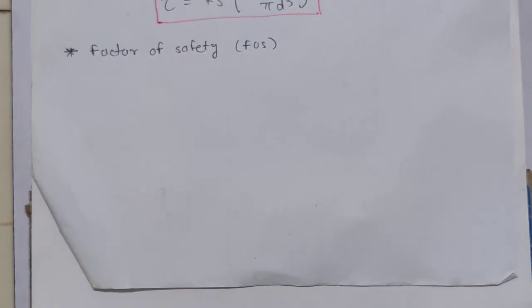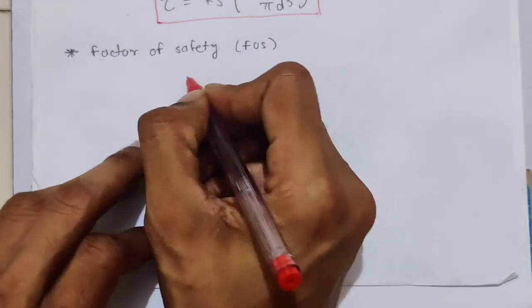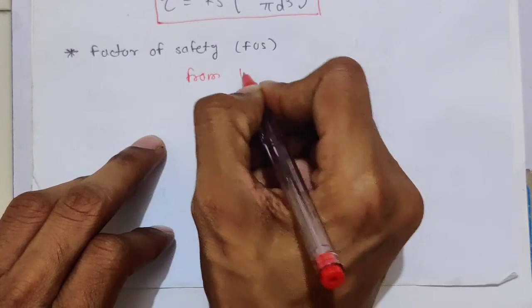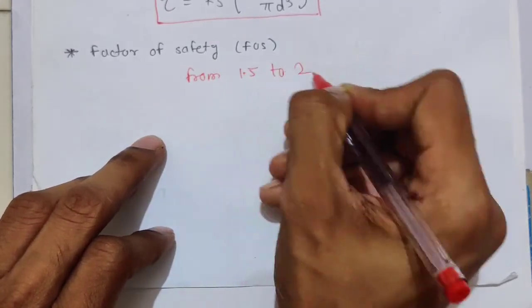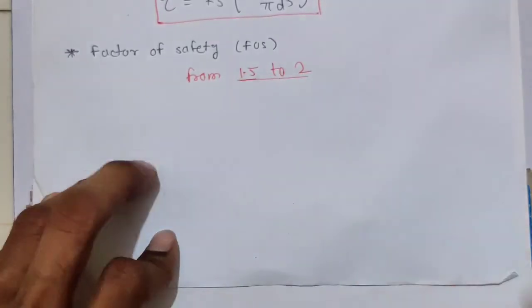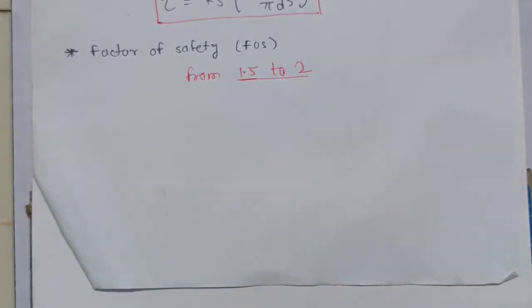The last topic of today's video is the factor of safety for springs. For springs, we usually consider a low factor of safety — between 1.5 and 2, typically 1.5.